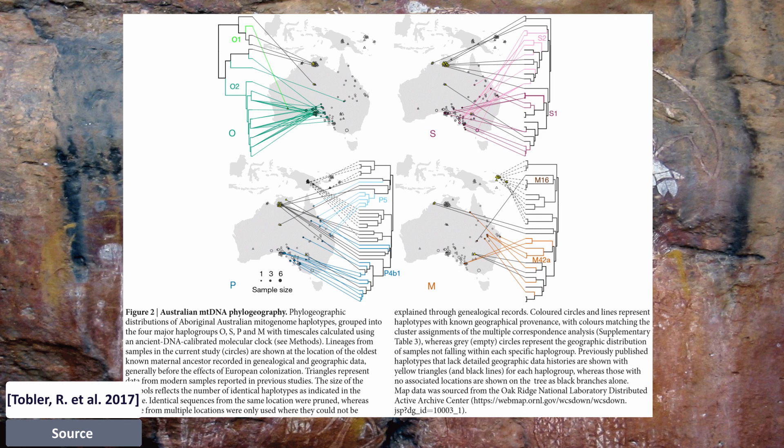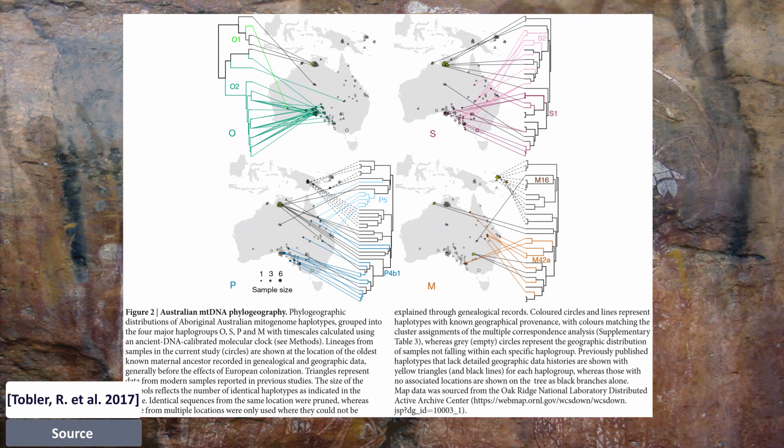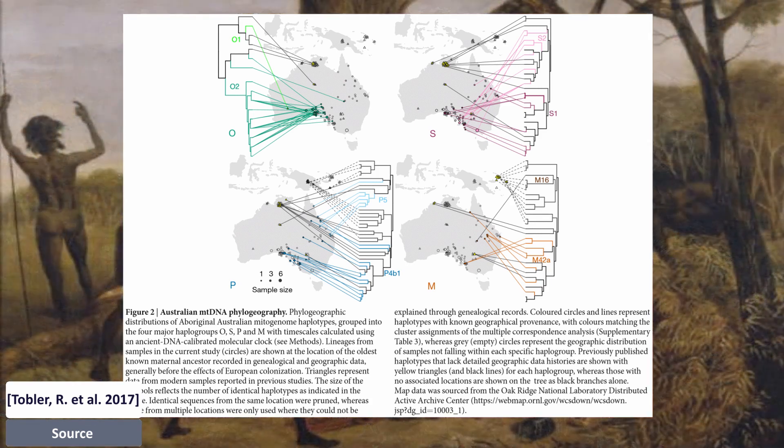Migration paths are both based on the distribution of haplogroups. The very limited geographical movement of populations over time is consistent with the observation of nomadic sedentism in recent Aboriginal Australian societies.